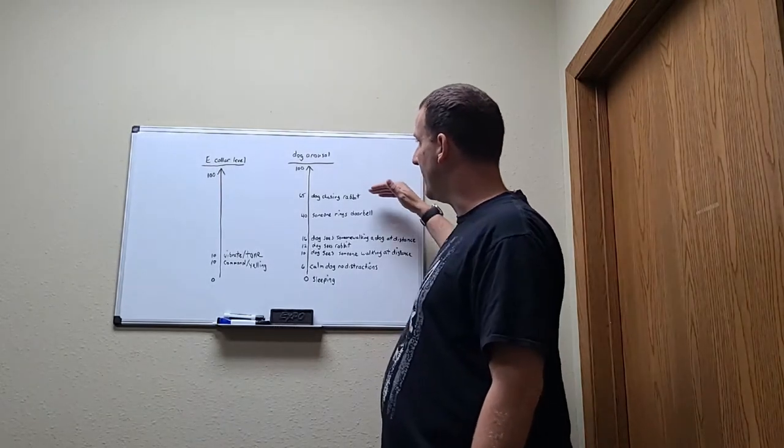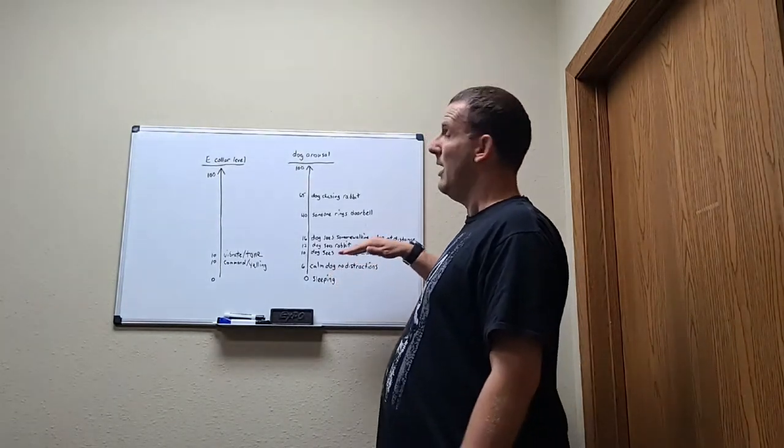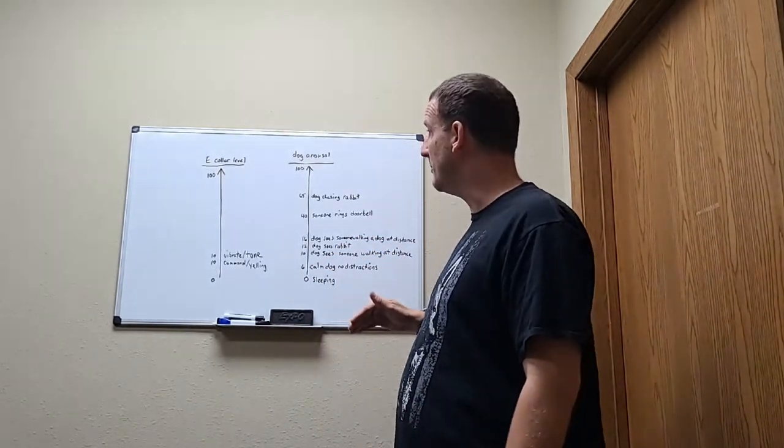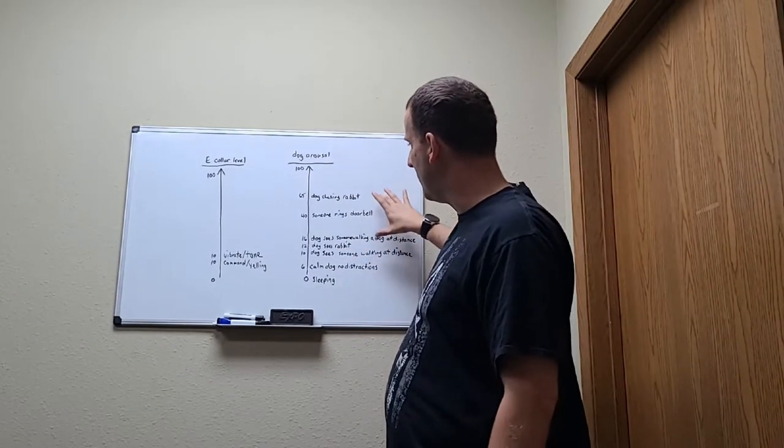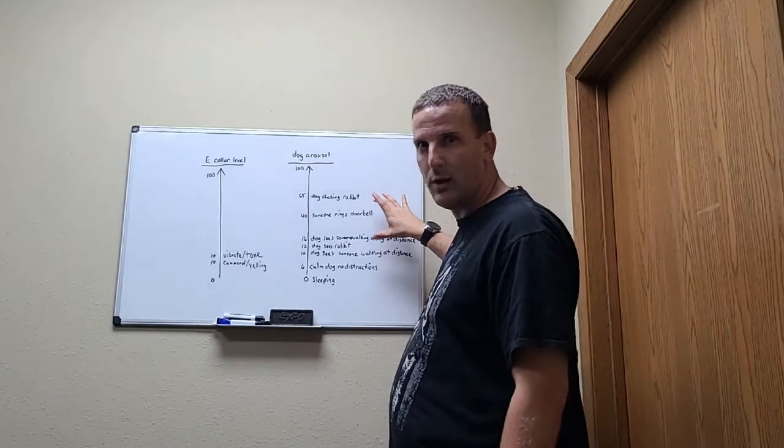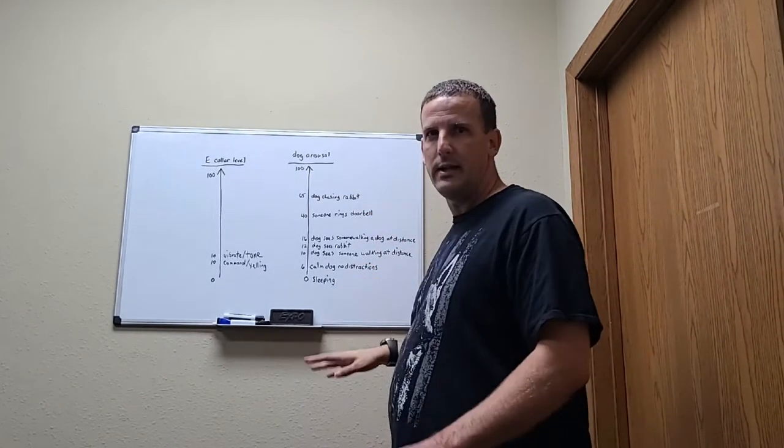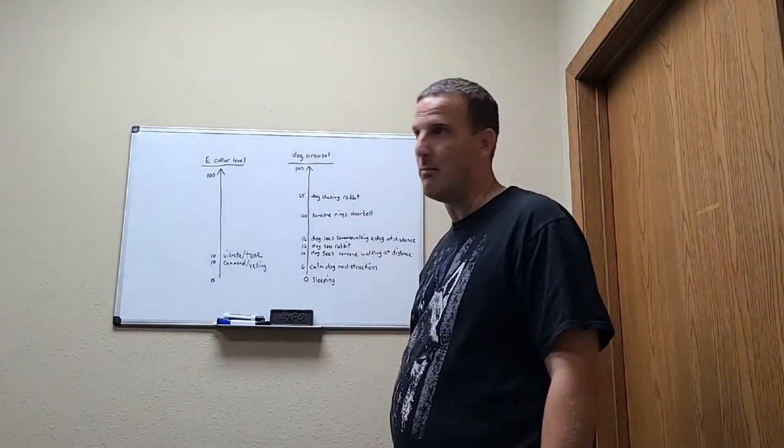Now of course, if my dog was down here, calm, and I hit it with a 65, that dog is going to yelp. That's a really strong stimulation, but depending where the dog is, it's not. I'm using this example because this is what I found with my dog when it decided to chase a rabbit. It took me up to a 65. He didn't yelp, he didn't do anything. At that moment, he realized I was calling for him and he just turned around and came back.